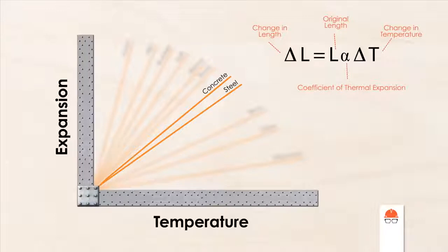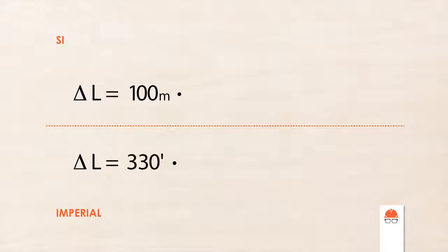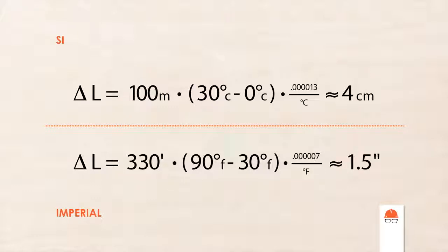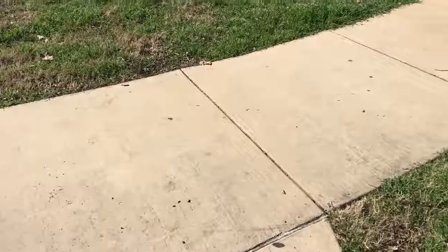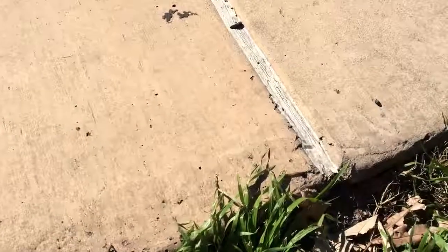A perfect example of this is a sidewalk. Let's look back at our formula and plug in some numbers for a very typical situation. If we enter values for the average length of a city block, the average high and low temperatures in a given year, and the thermal expansion coefficient for concrete, we can see the total movement of a sidewalk over the course of a year can be upwards of 4 centimeters, or 1.5 inches. You can't leave a gap that big at the end of every block, so instead we leave small gaps spaced every so often. Every so often you'll see an actual break in the concrete filled with some kind of flexible material — these are expansion joints that give the walkway the freedom to move from fluctuations in temperature.